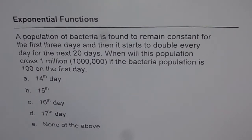A population of bacteria is found to remain constant for the first three days, and then it starts to double every day for the next twenty days. When will this population cross one million (that is, 1,000,000) if the bacteria population is 100 on the first day?